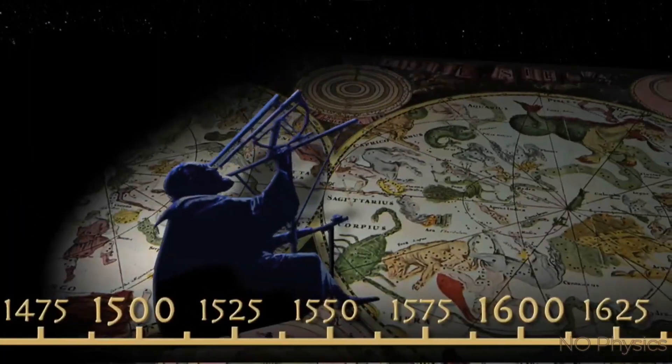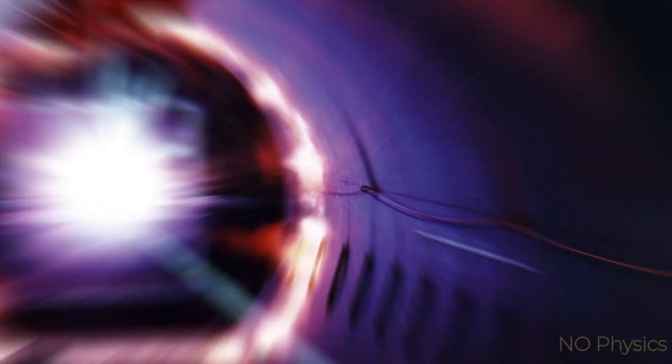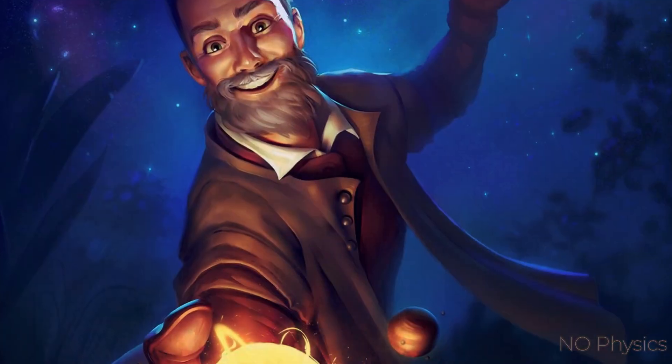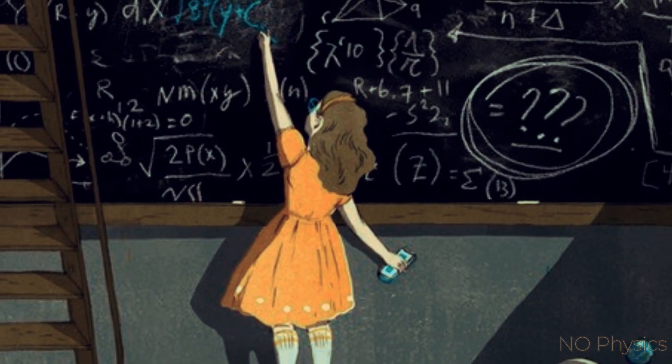In the beginning of the 17th century, the outer shell of physics was built by Kepler, Newton, Galileo, and others such as Huygens, Hooke, and Leibniz.